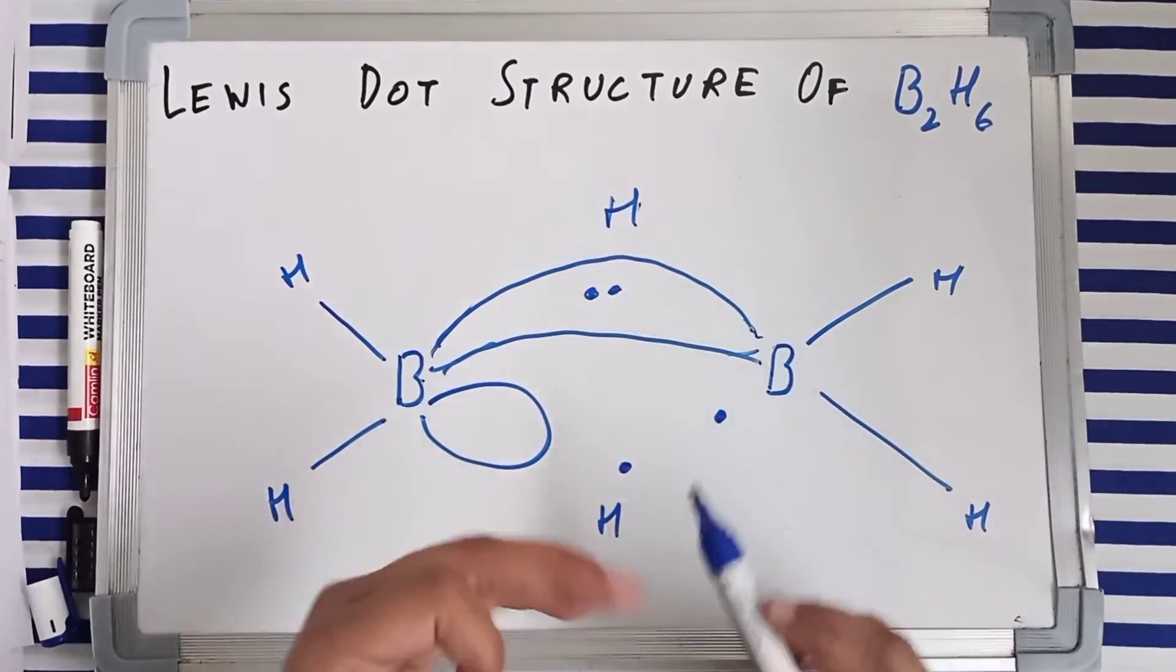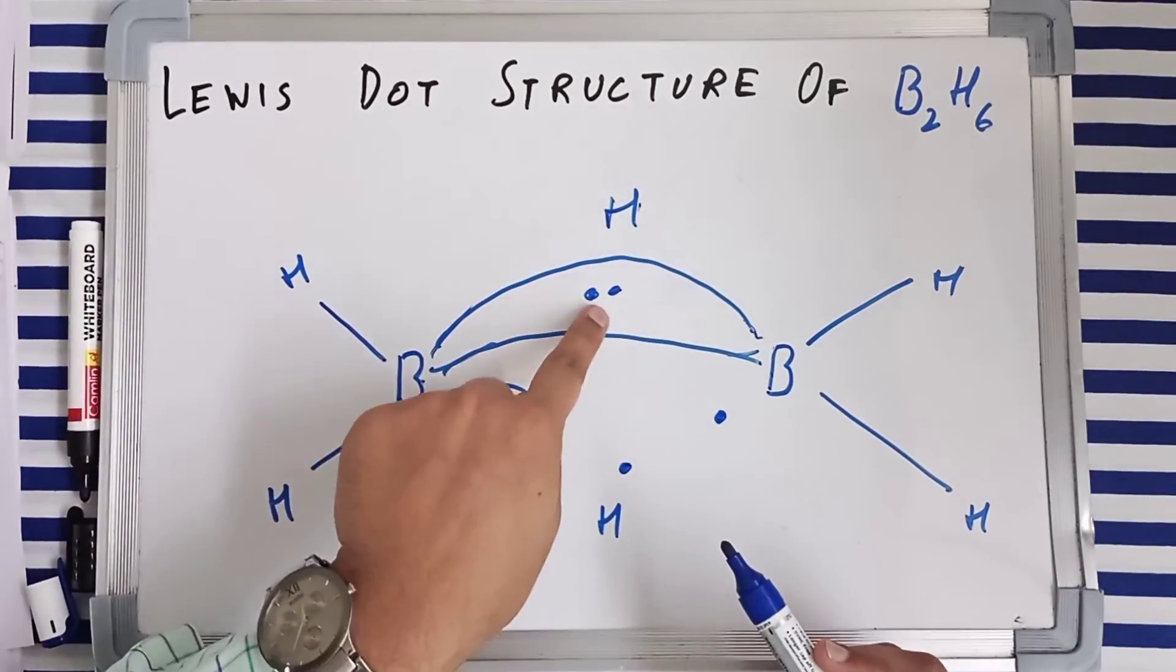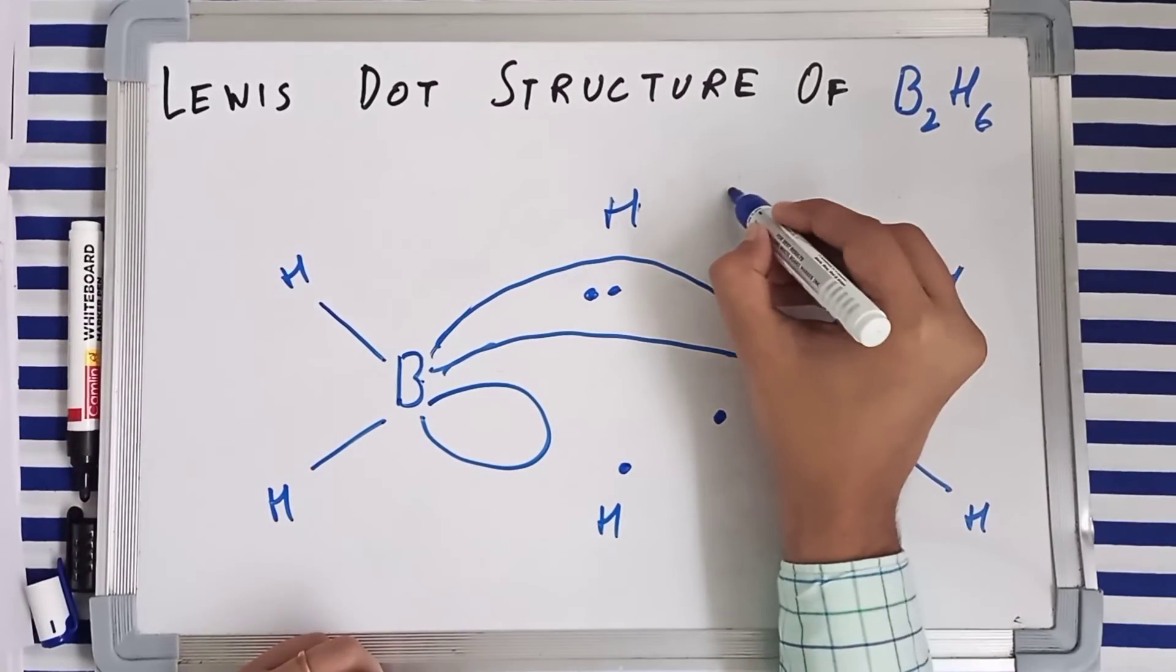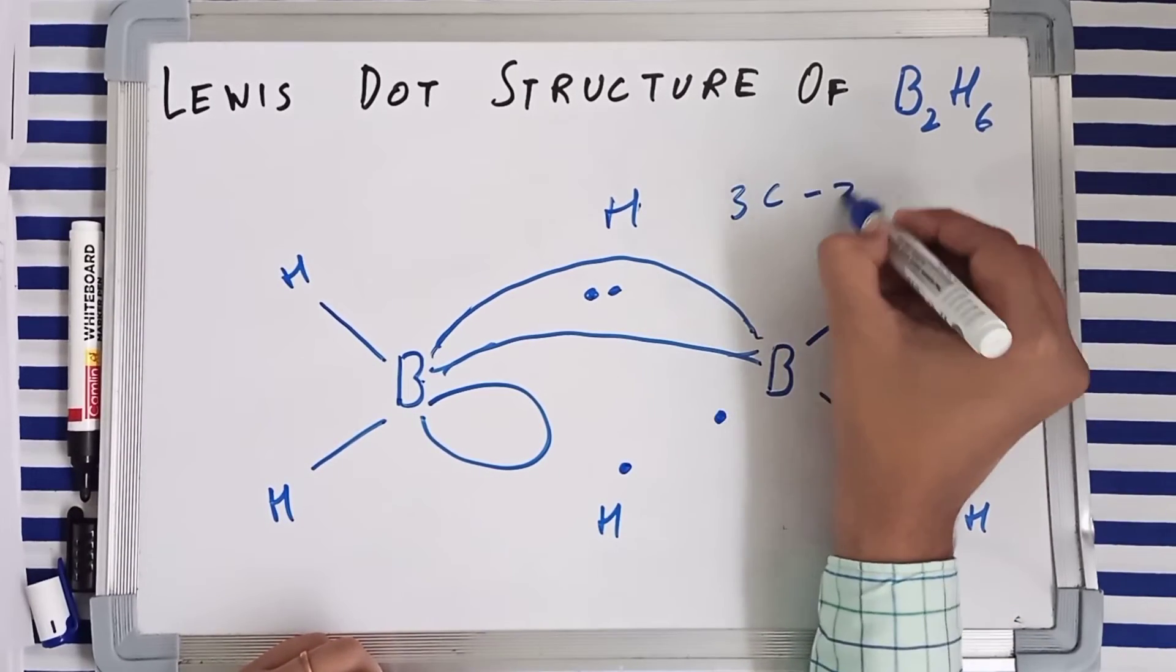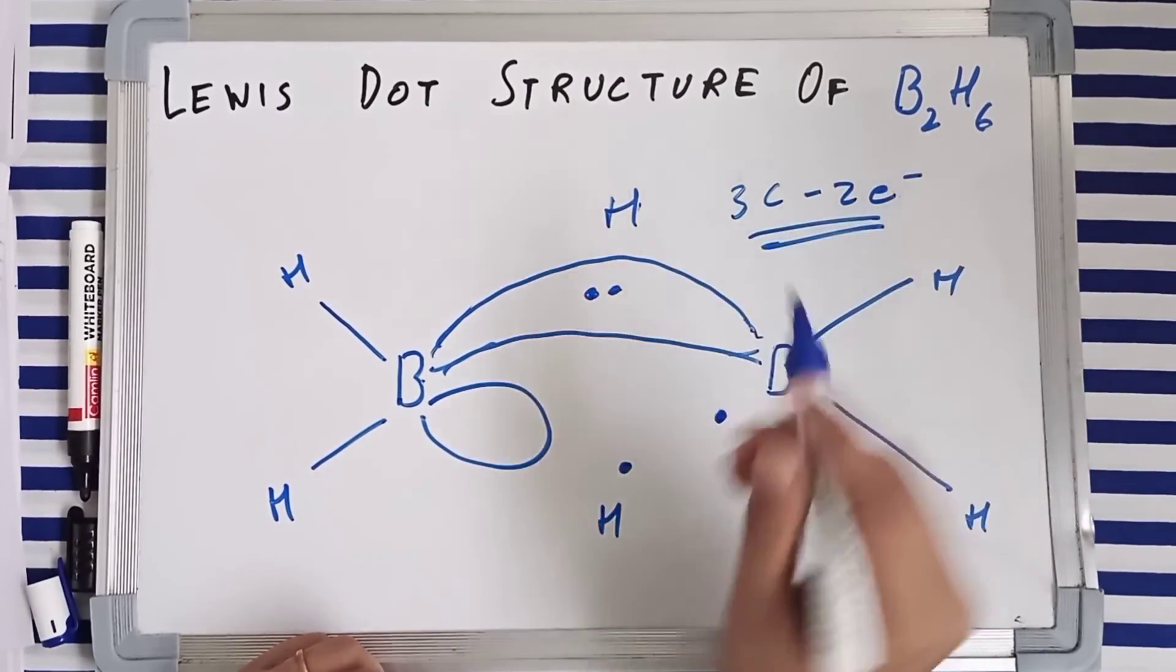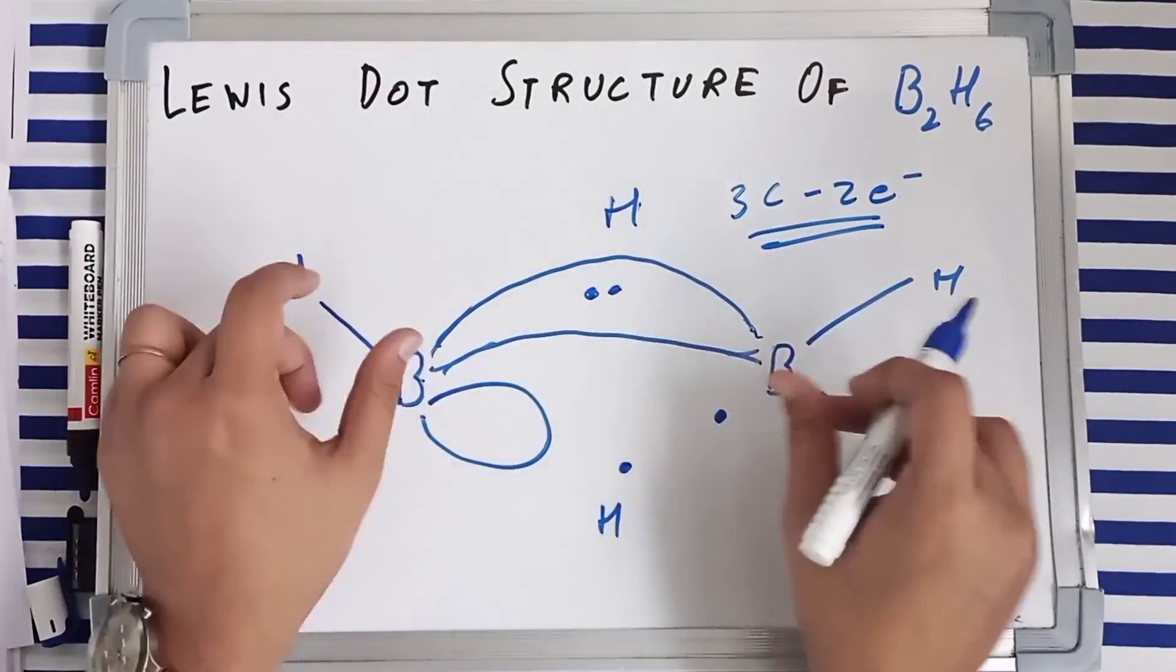So you got one, two, three, three centers and you got two electrons. So this system is called three-centered two-electron system and is known as a banana bond.